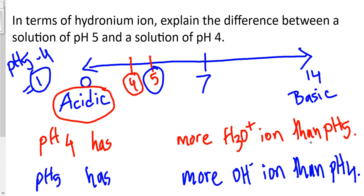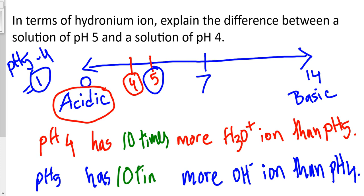pH 4 has more hydronium ion than pH 5 — we already know this. Since the difference is 1, the factor is 10. We can say that pH 4 has 10 times more hydronium ion than pH 5. The same thing can be said in reverse: pH 5 has 10 times more hydroxide ion than pH 4.